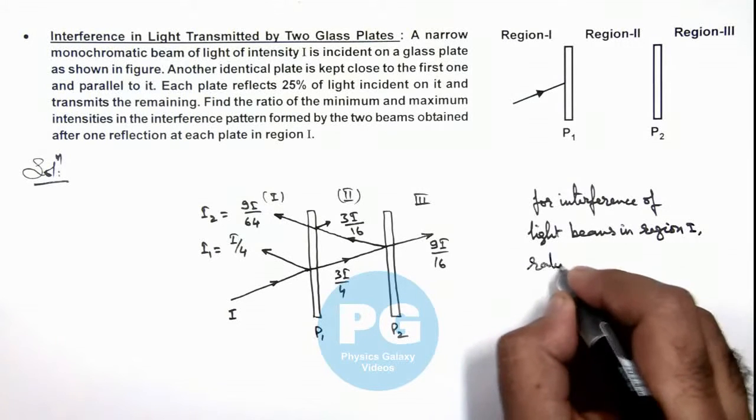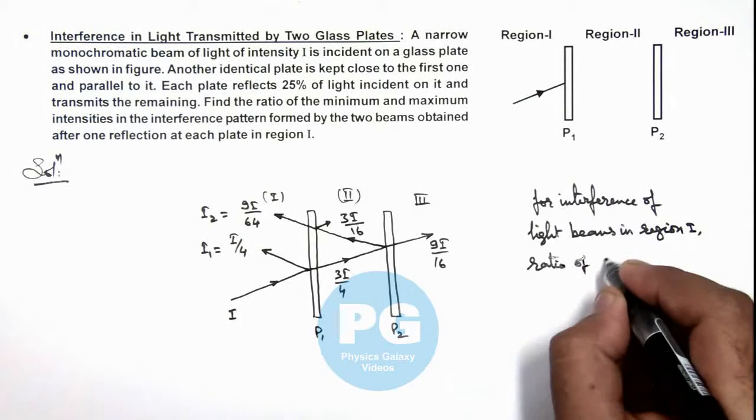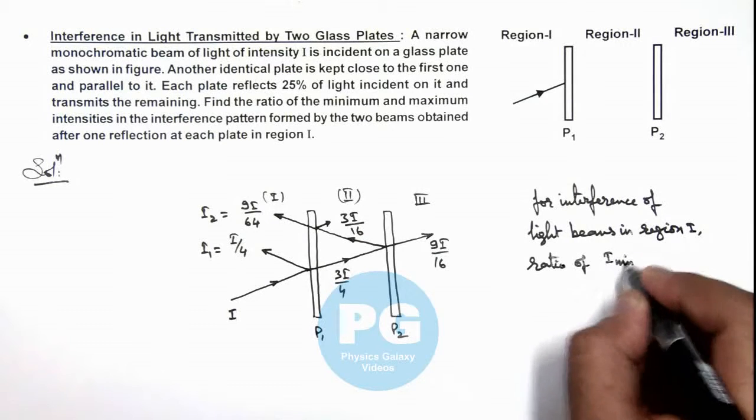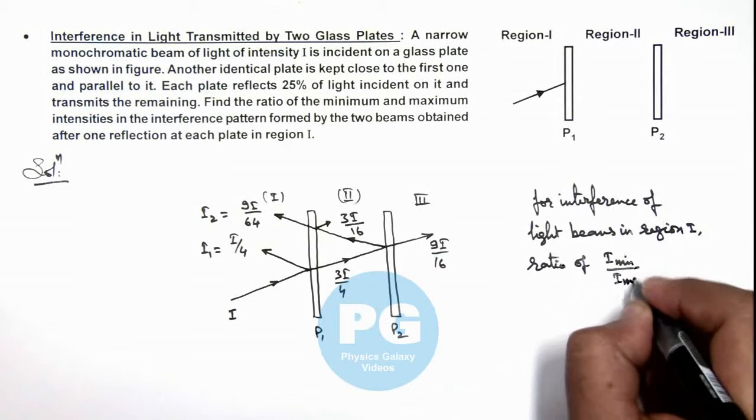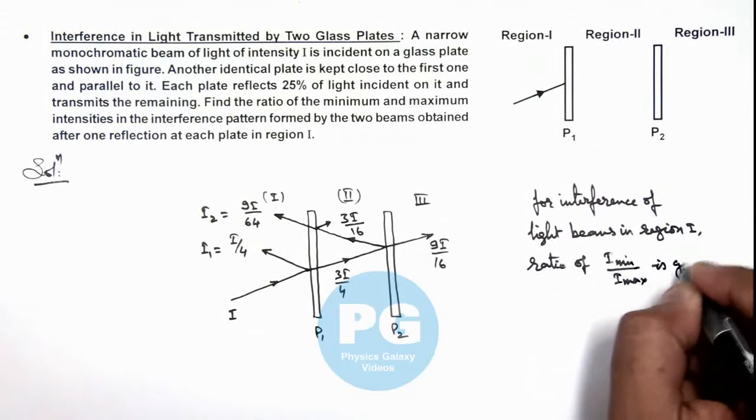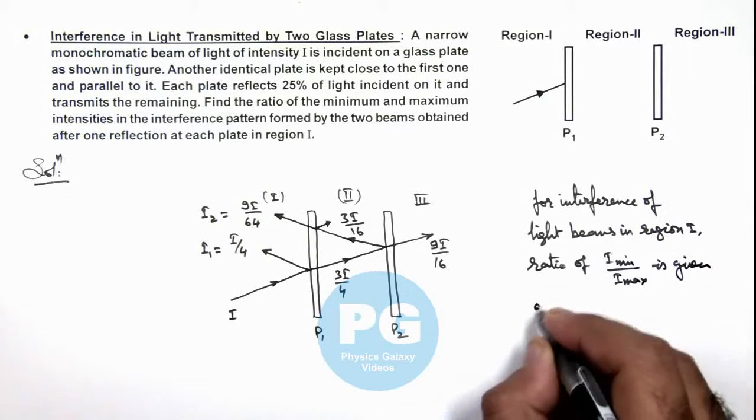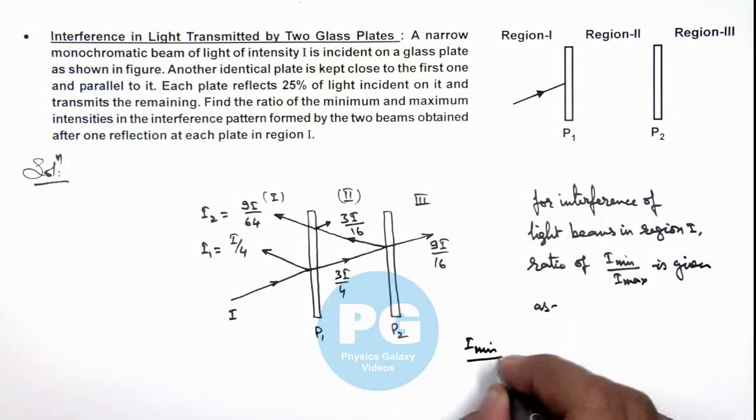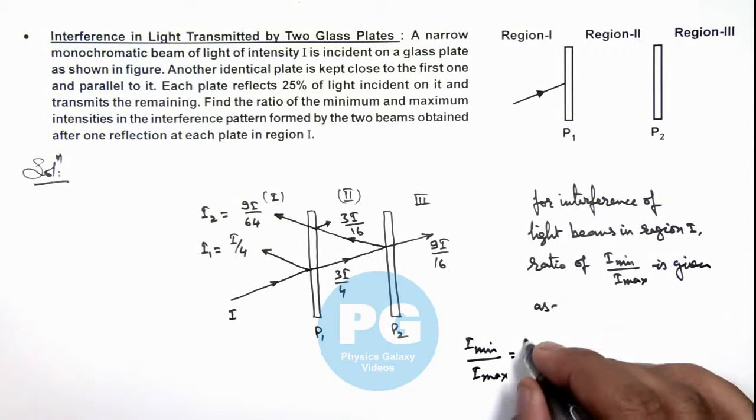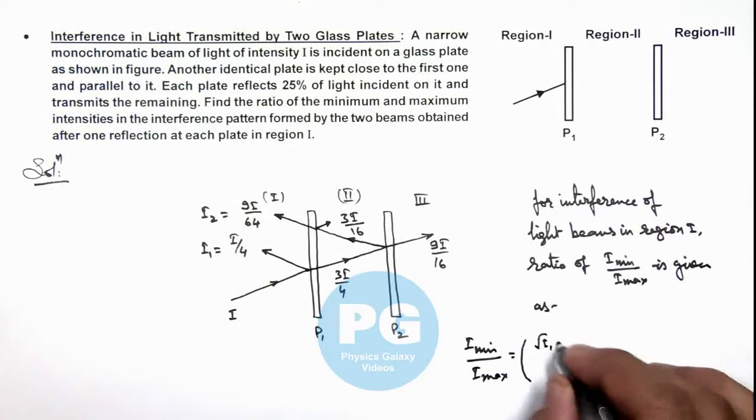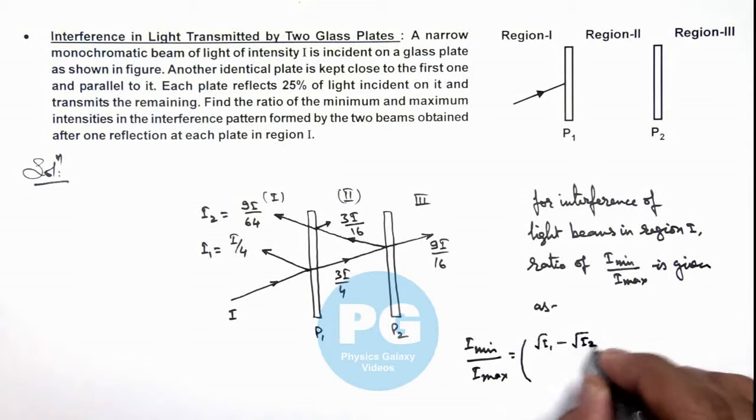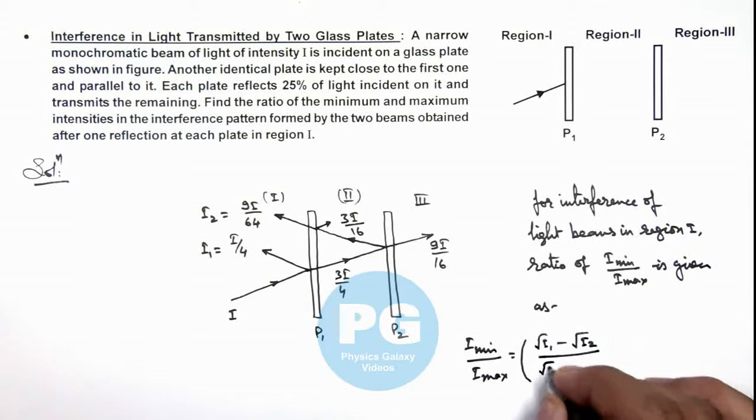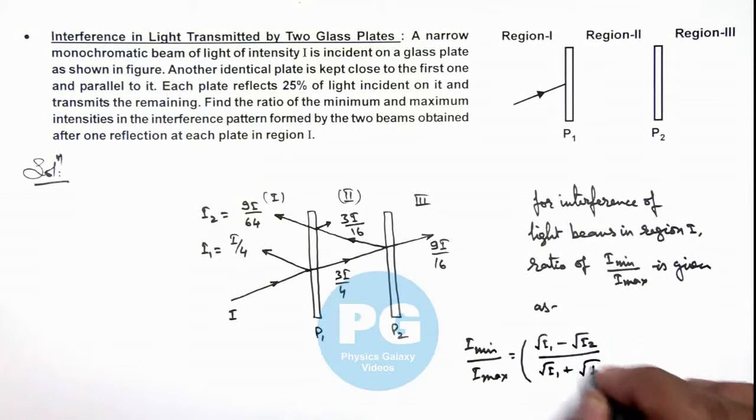a ratio of I_min to I_max is given as: I_minimum to I_maximum is equal to this is root. I_min to I_max is equal to (√I₁ - √I₂)/(√I₁ + √I₂) whole square.